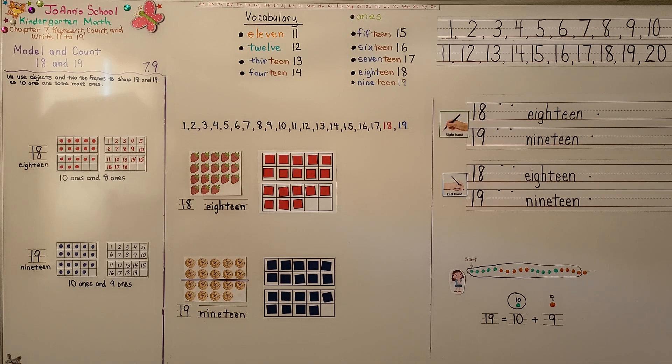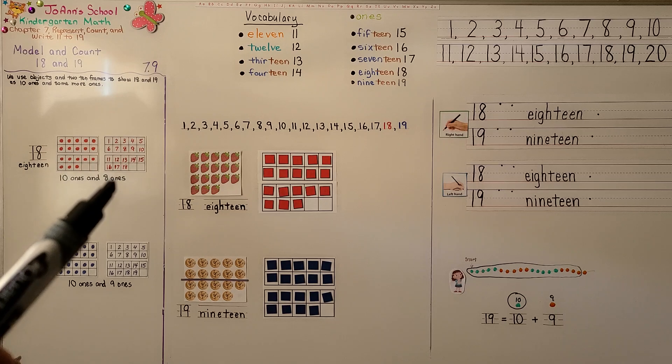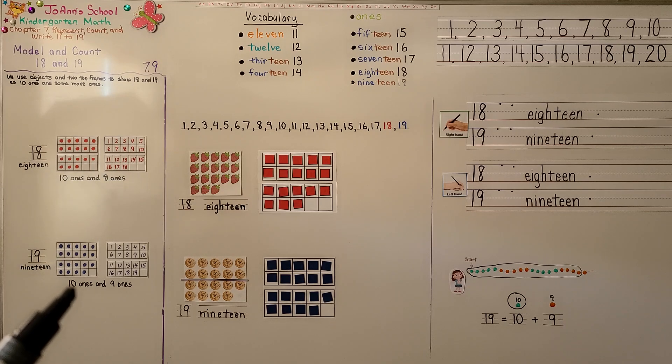So remember, 18 is 10 and 8 more, and 19 is 10 and 9 more. And to be very careful when you count, so you count the correct number.